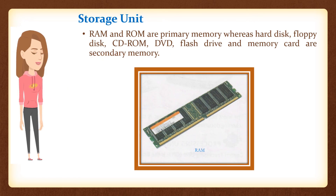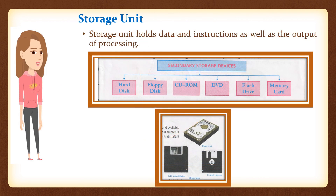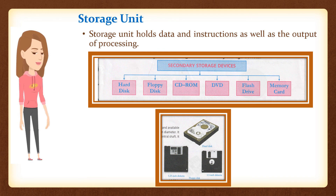Storage unit: RAM and ROM are primary memory, whereas hard disk, floppy disk, CD-ROM, DVD, flash drive and memory card are secondary memory. The storage unit holds data and instructions as well as the output of processing.